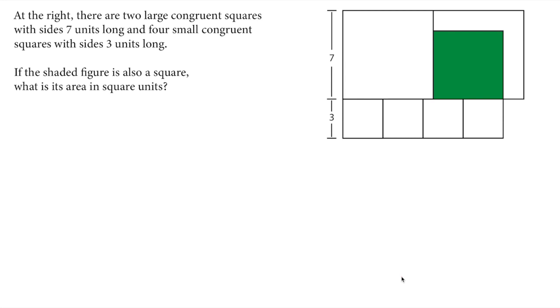At the right, there are two large congruent squares with sides seven units long and four small congruent squares with sides three units long. If the shaded figure is also a square, what is its area in square units?